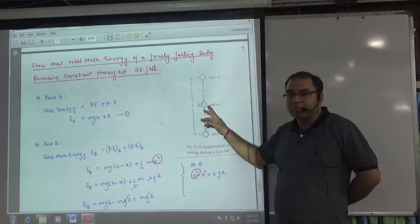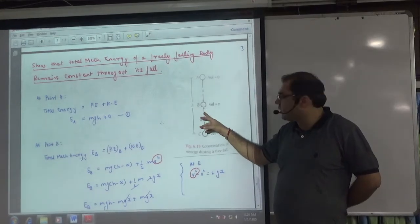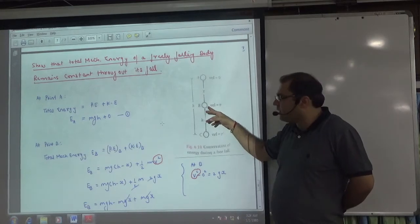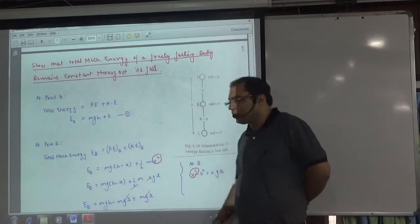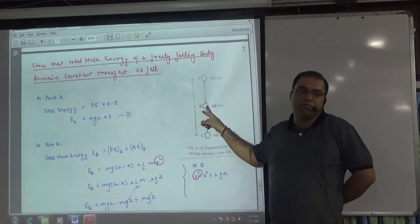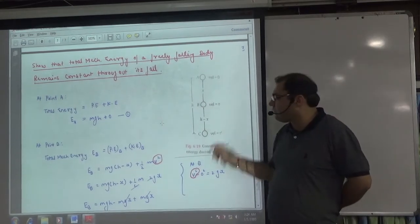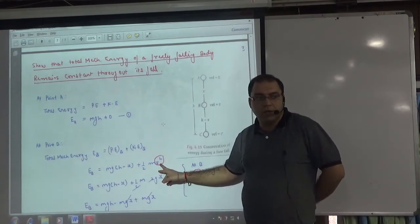At point B, total energy is sum of potential and kinetic. What will be mg into h minus x. In kinetic, let us suppose this ball has acquired a velocity of v at this point. Kinetic energy is equal to half mv square.